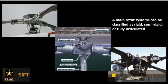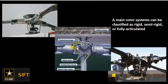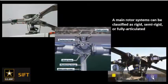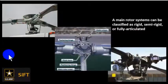We'll talk about all three systems briefly. We have the rigid system, the semi-rigid, and the fully articulated system. We can see our SIFT icon there, so this is probably something that, if you are preparing to take the SIFT test, you want to be paying attention to.